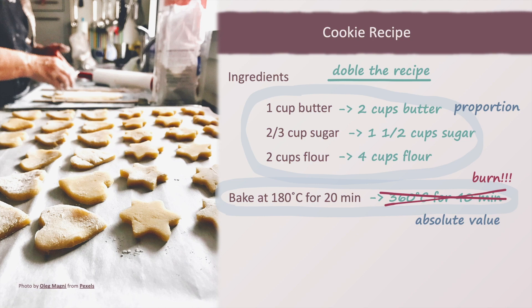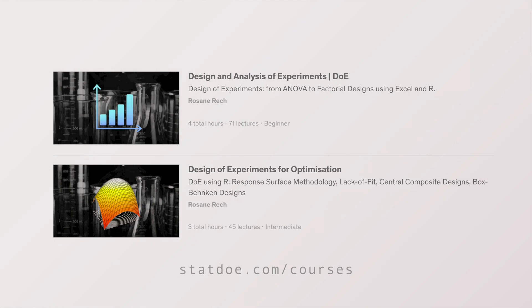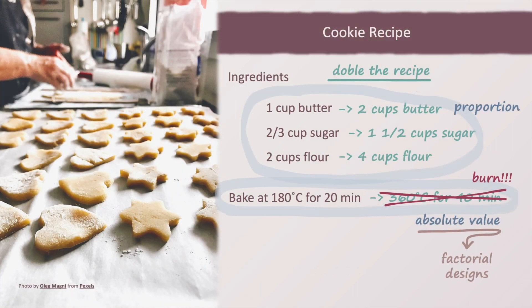The study and optimization of absolute variables can be made through the use of factorial designs, as you already know if you have taken courses on design and analysis of experiments and design of experiments for optimization. However, for the study of mixture variables, when what matters is the proportion among the components of a mixture, the best approach is to use specific mixture designs and analysis.